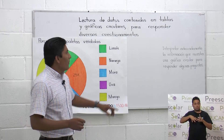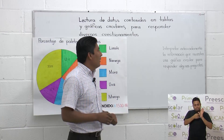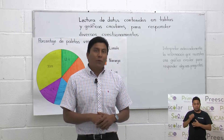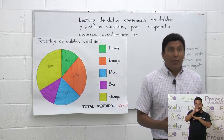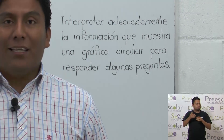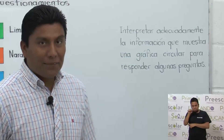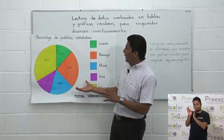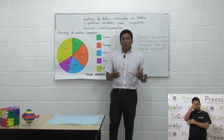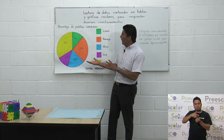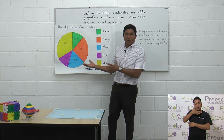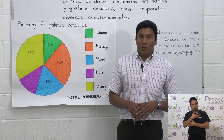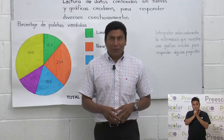Con el desarrollo de este tema vamos a interpretar adecuadamente la información que se muestra en una gráfica circular para responder algunas preguntas. En las sesiones pasadas ya estuvimos viendo mucho sobre porcentajes, también bastante sobre fracciones, y algunos temas que tienen que ver con gráficas circulares. Hoy vamos a ver una de estas, que es la que se muestra a continuación. Viene un porcentaje de paletas vendidas, que también aparece en tu libro de desafíos matemáticos.